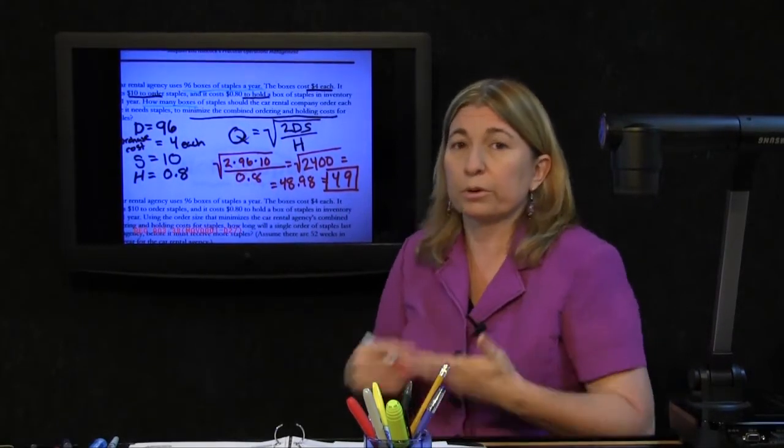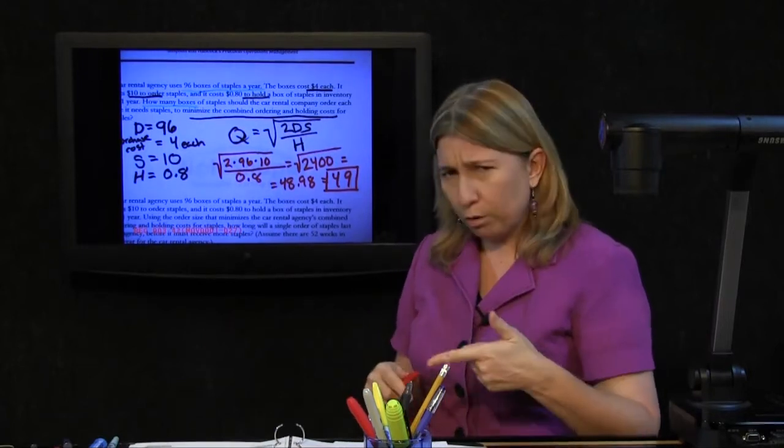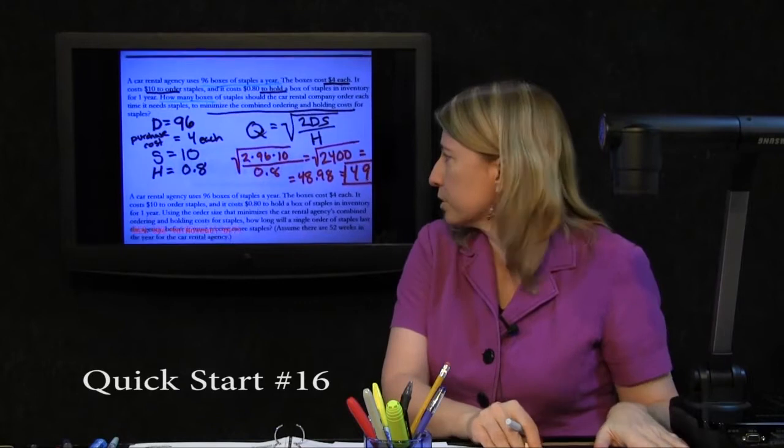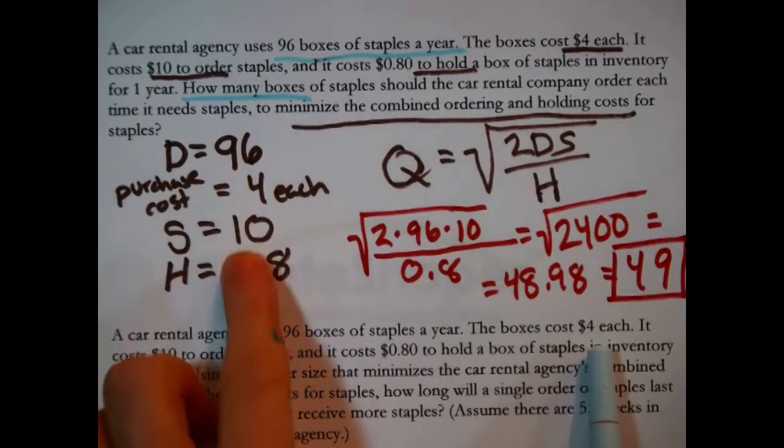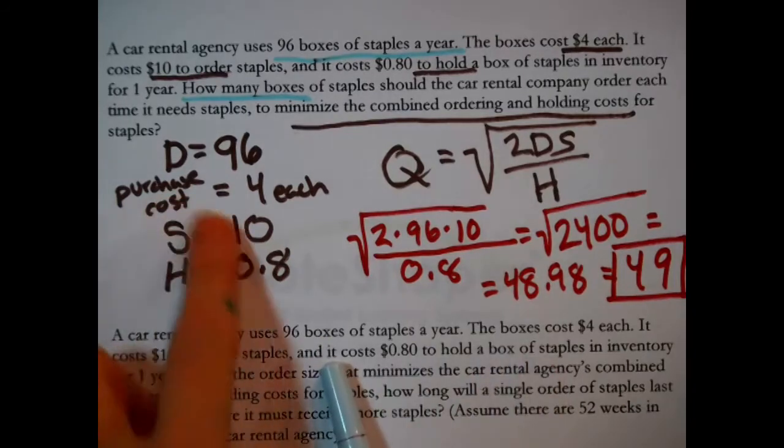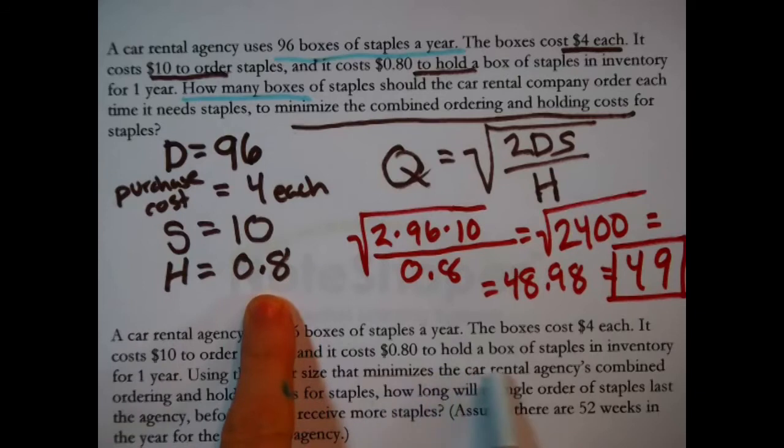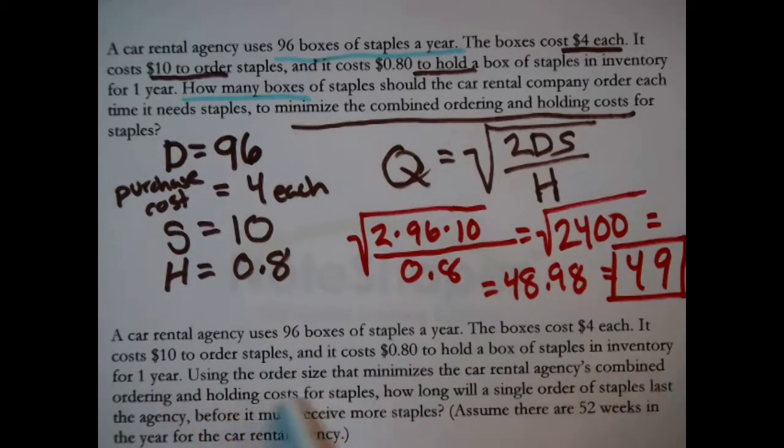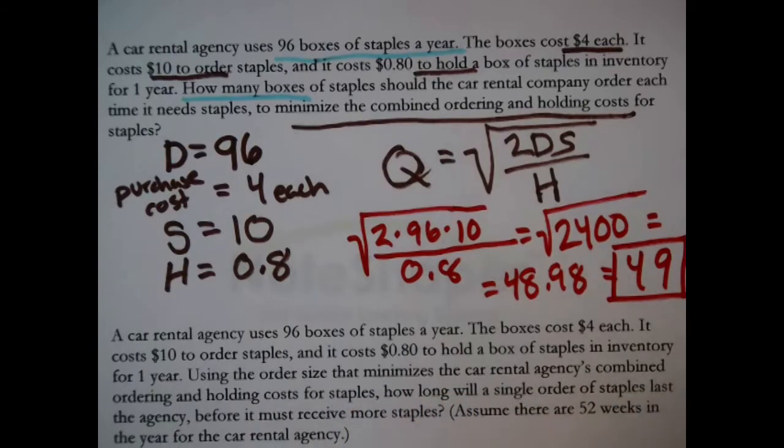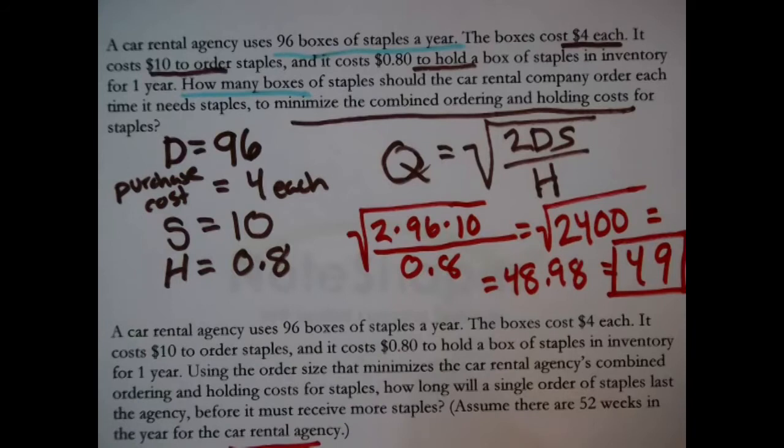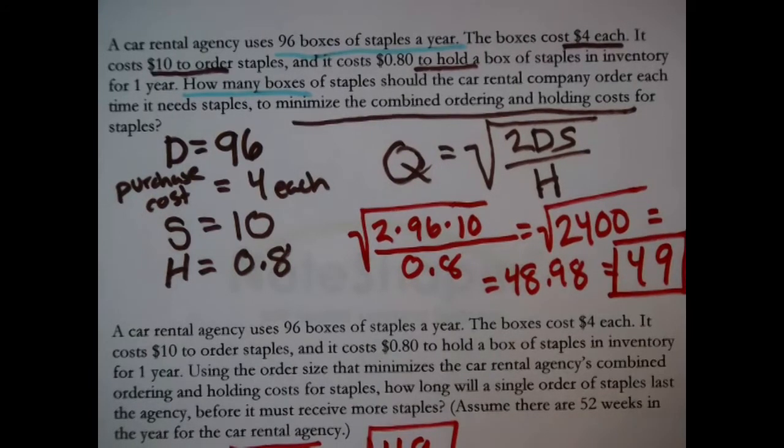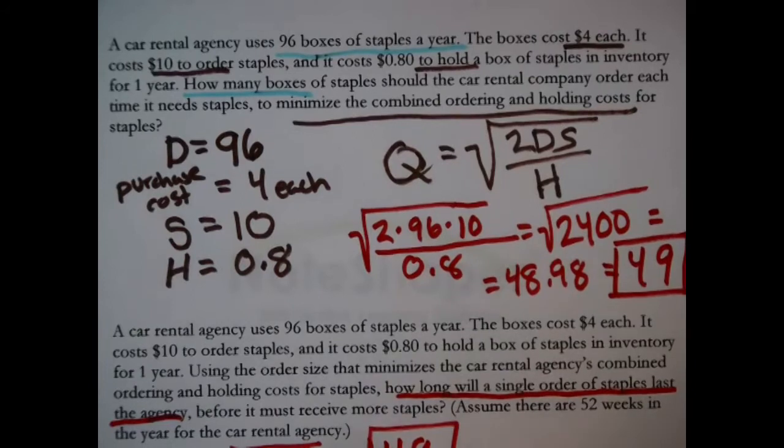The problem after that is about the same car rental agency. They use 96 boxes of staples per year. The boxes cost $4 each, it costs $10 to order staples, and it costs 80 cents to hold a box of staples in inventory for one year. Using the order size that minimizes the car rental agency's combined ordering and holding costs - using this fact that we discovered and rounded to a recommendation of 49 - how long will a single order of staples last the agency? Also known as the length of the order cycle.